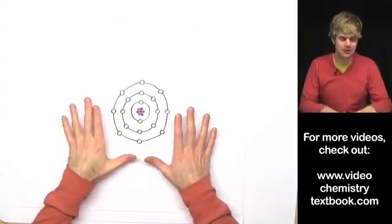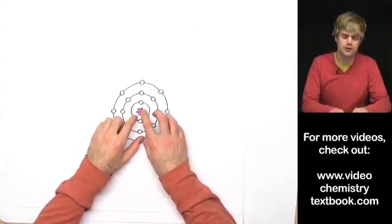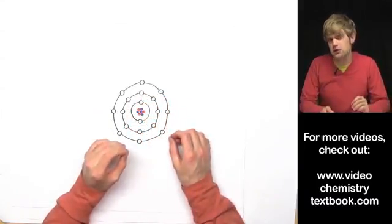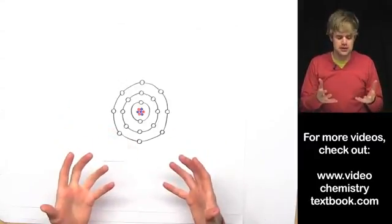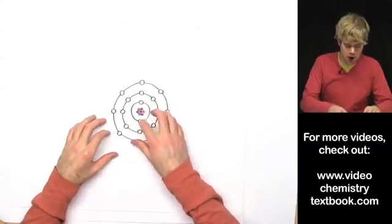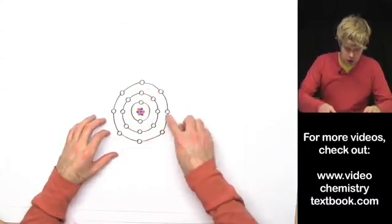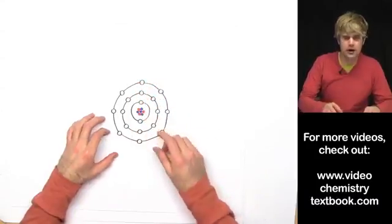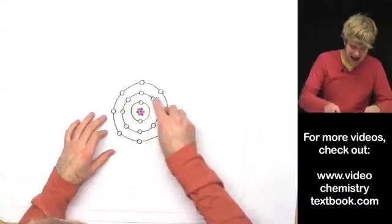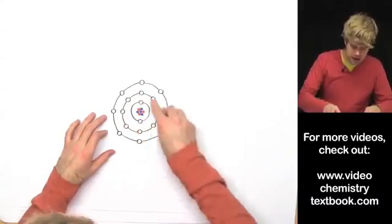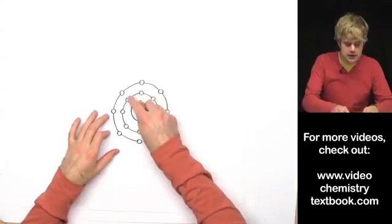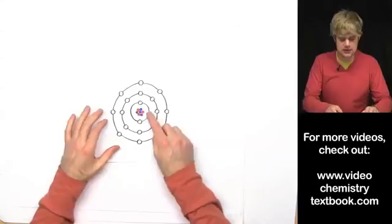Check out this diagram of an atom. In the middle is the nucleus with protons and neutrons. Each one of these little circles represents a spot that could hold one electron — you can think of these as parking spots or theater seats for electrons. These spots are organized into circles called energy levels or shells, which show the path that electrons take as they spin around the nucleus and arrange electrons into groups at varying distances from the center of the atom.